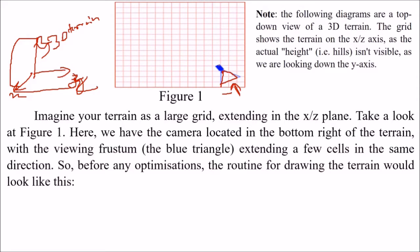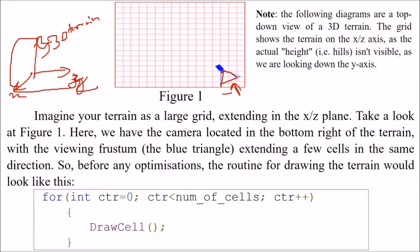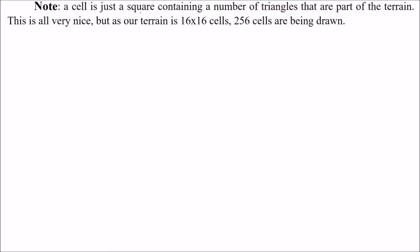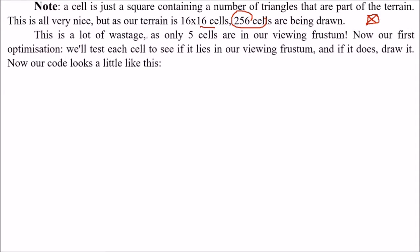So before any optimization, the routine for drawing the terrain would be something like this. Say you have a counter with number of cells and you just draw the cell. A cell is just a square containing a number of triangles that are a part of the terrain. This is all very nice, but say our terrain is 16 by 16 — that is 256 cells to be drawn.